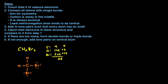Moving on to step four, we count the total number of electrons in the Lewis structure and compare that to the number from step one. Counting all electrons: two, four, six, eight, ten, twelve, fourteen, sixteen, eighteen, twenty — and that matches the twenty we calculated. Because these numbers match up, we're done, and this is the Lewis structure of CH₂Br₂.